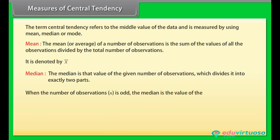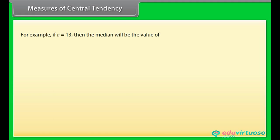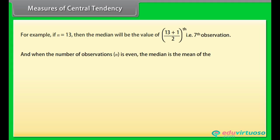When the number of observations n is odd, the median is the value of the ((n+1)/2)th observation. For example, if n = 13, the median is the value of the 7th observation. When n is even, the median is the mean of the (n/2)th and the (n/2 + 1)th observations.